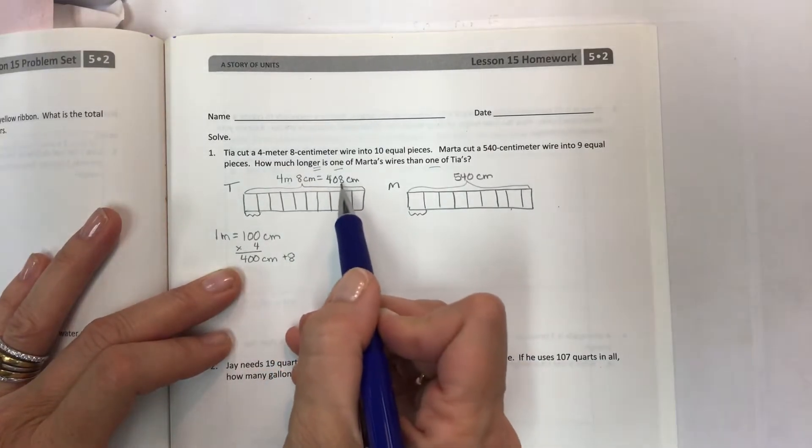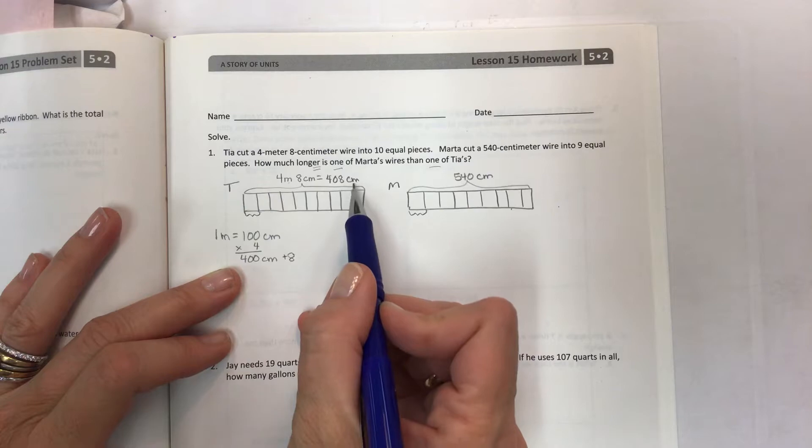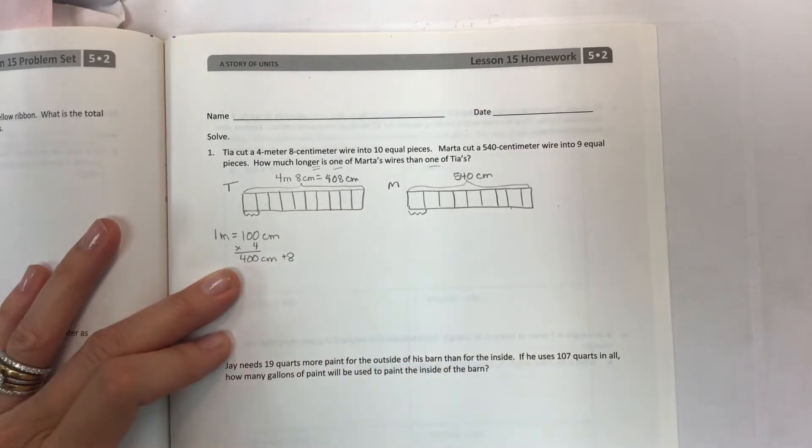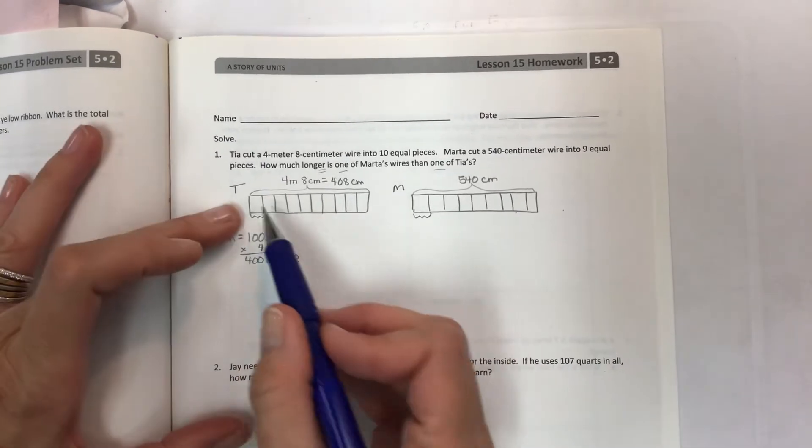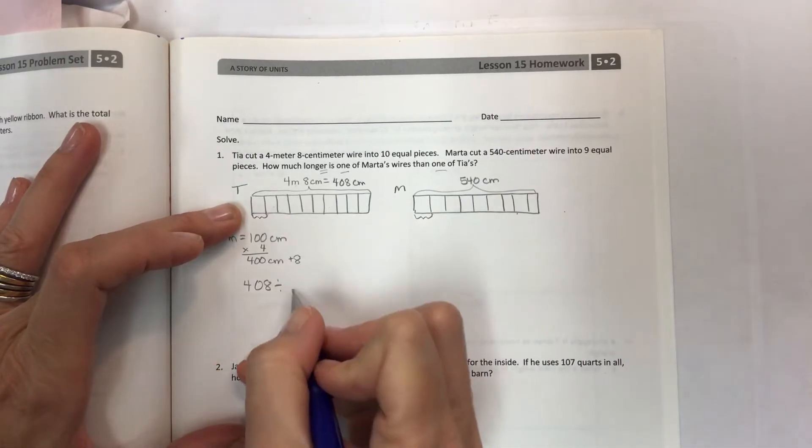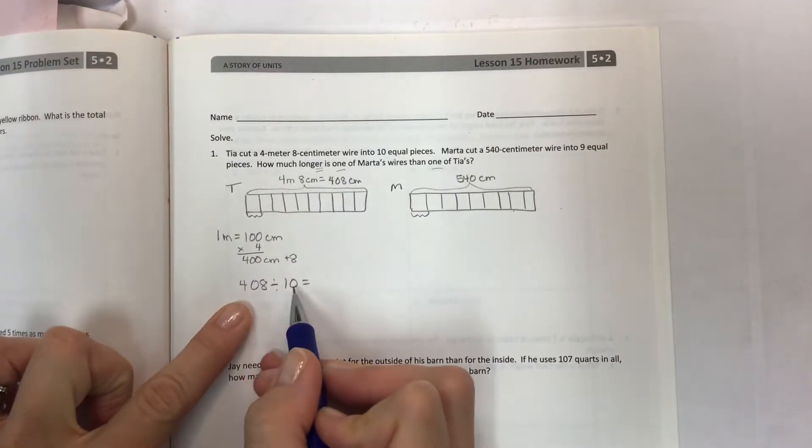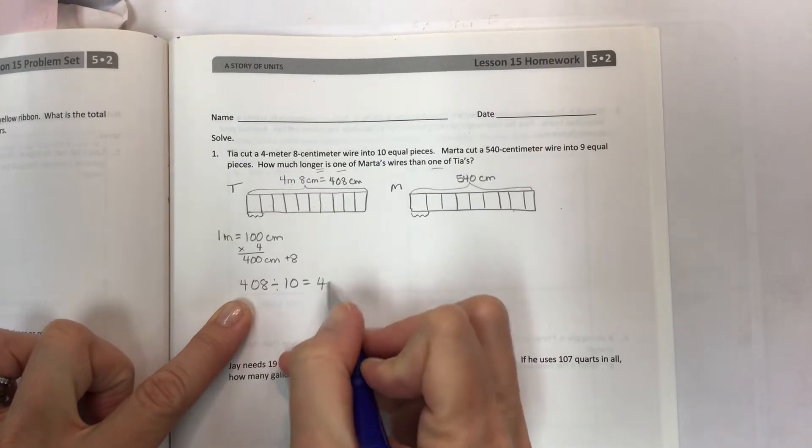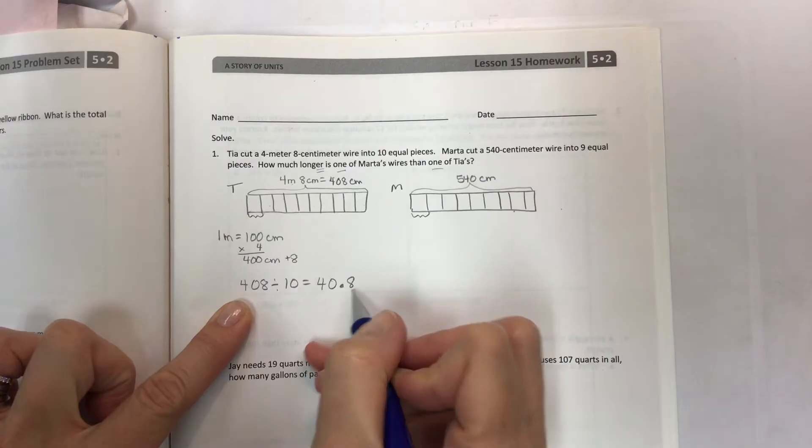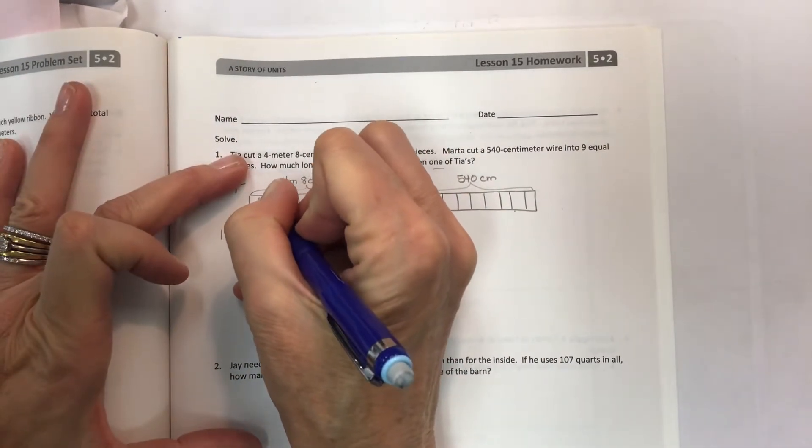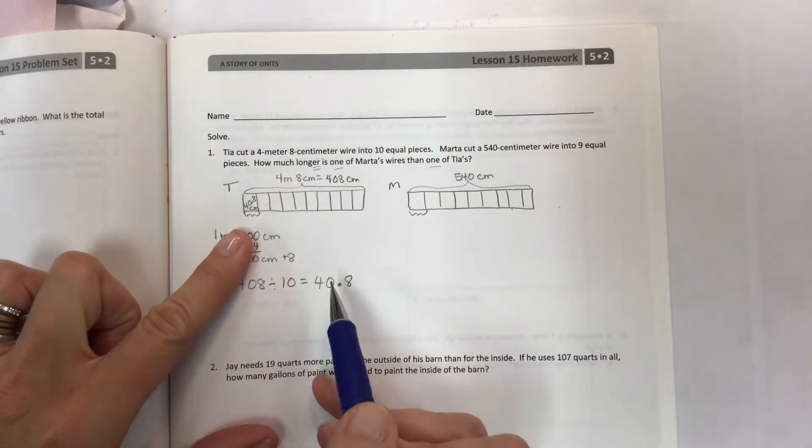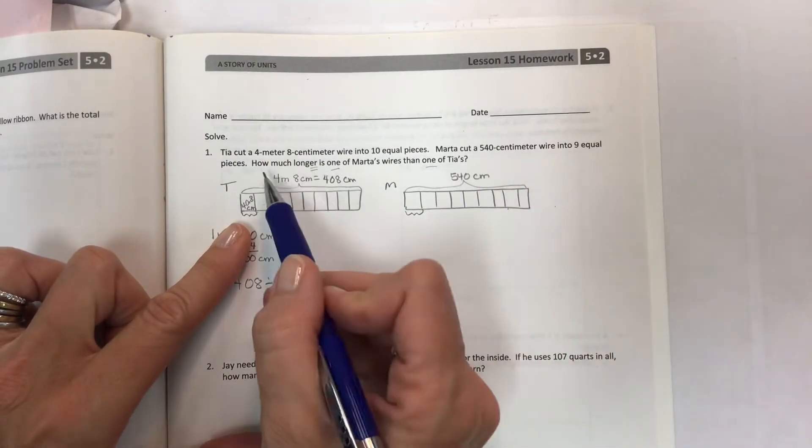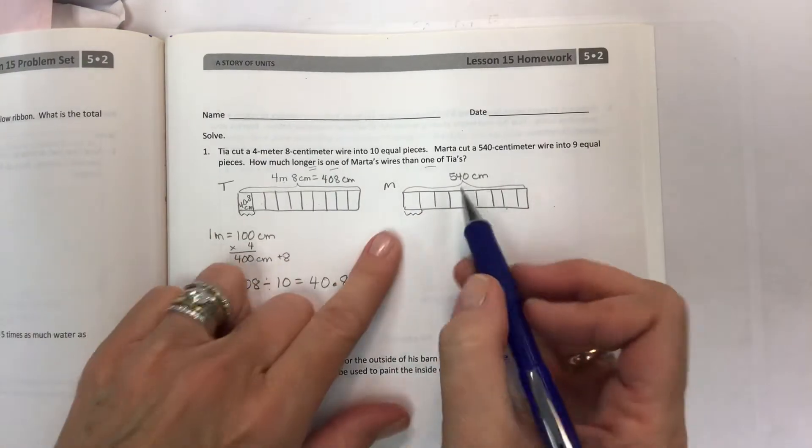So if the four meters is 400 centimeters, just add on the eight. So that equals 408 centimeters. So you can label it and then we can work with this. Now that I know that this is 408 centimeters, I can take that and I can find out the size of each one by doing what? I'm going to divide it into 10 parts.